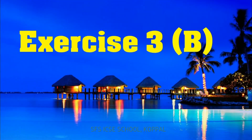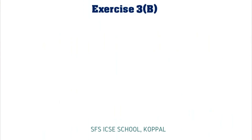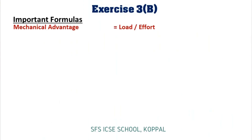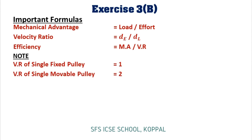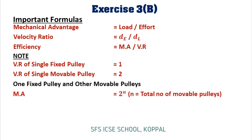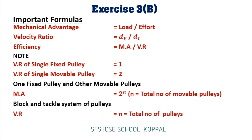Now let us discuss important formulas of Exercise 3b. Most formulas remain the same: mechanical advantage equals load divided by effort; velocity ratio equals distance moved by effort divided by distance moved by load; efficiency equals mechanical advantage divided by velocity ratio. In a single fixed pulley, velocity ratio is always 1. In a single movable pulley, velocity ratio is always 2. If there is one fixed pulley and other movable pulleys, mechanical advantage equals 2 raised to power N, where N is the total number of movable pulleys. In a block and tackle system, velocity ratio equals the total number of pulleys.